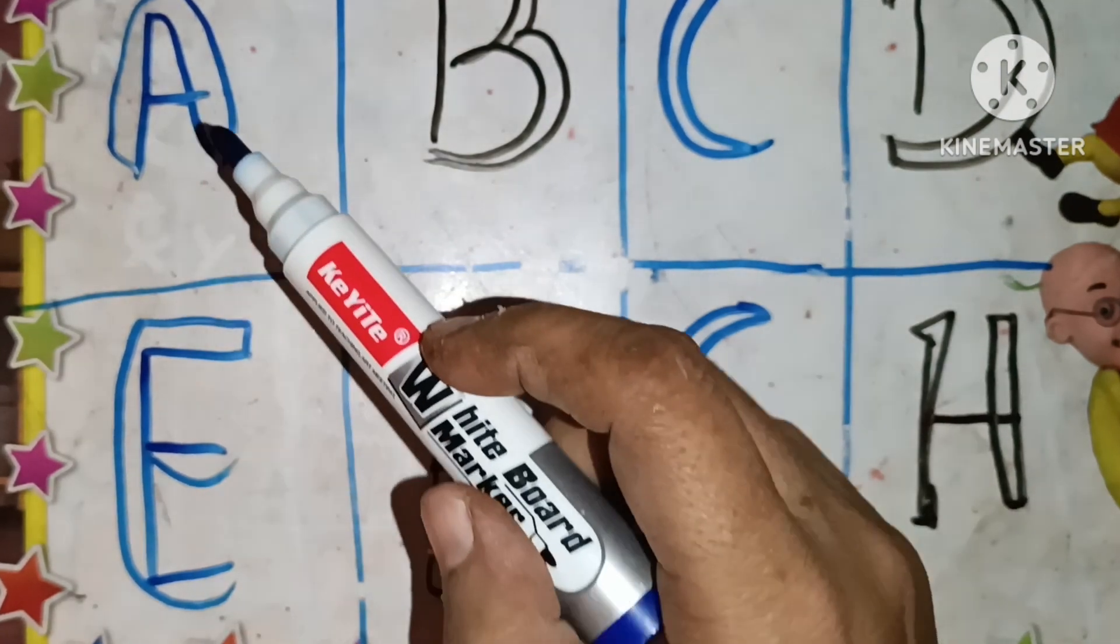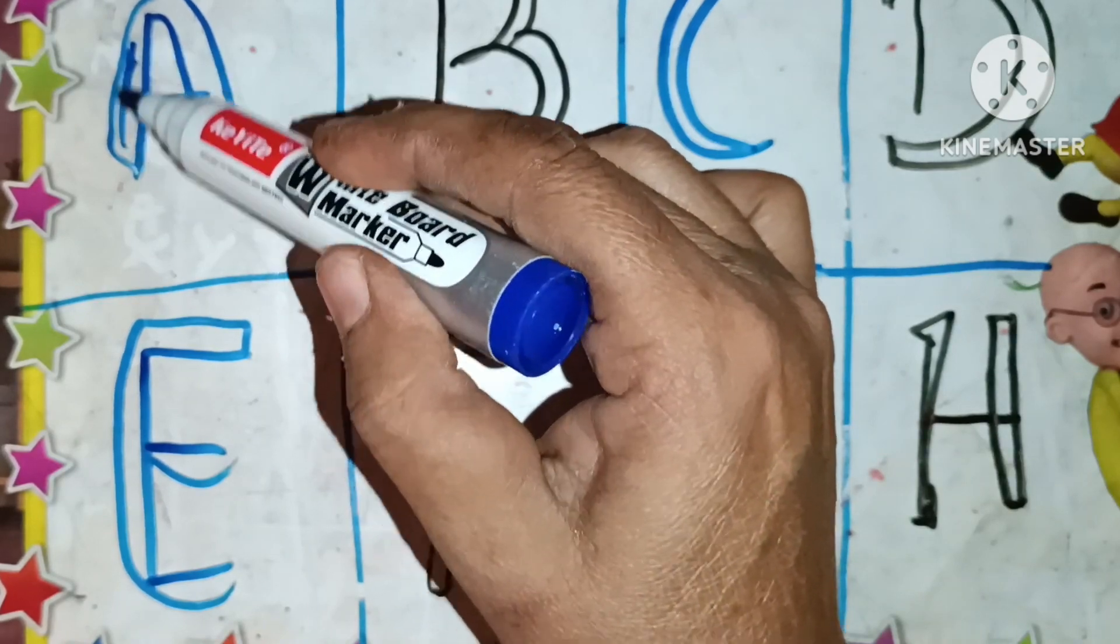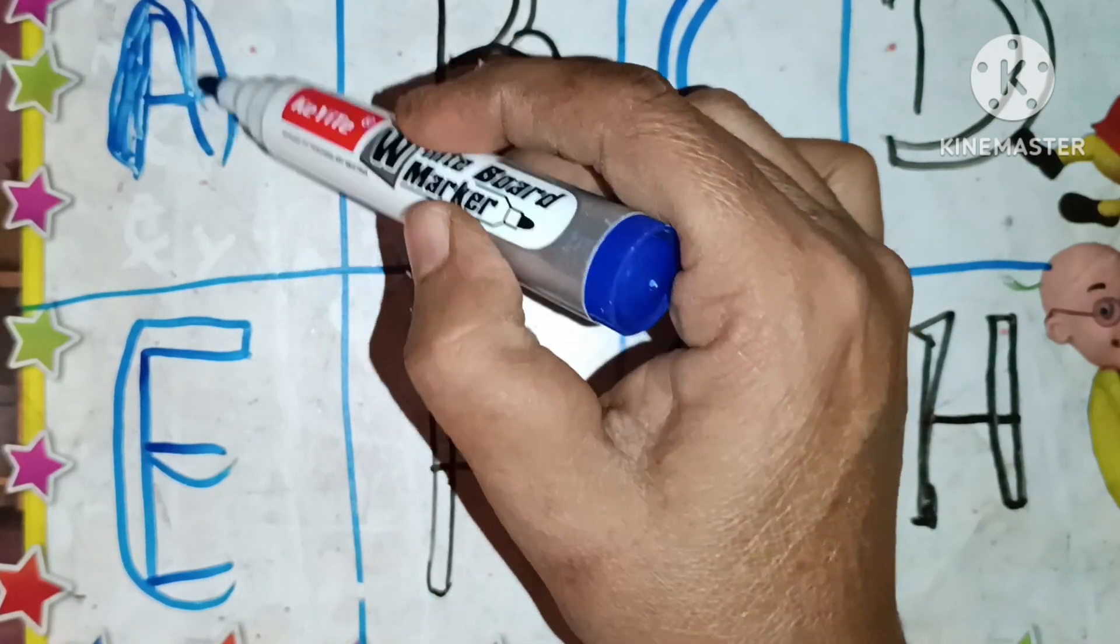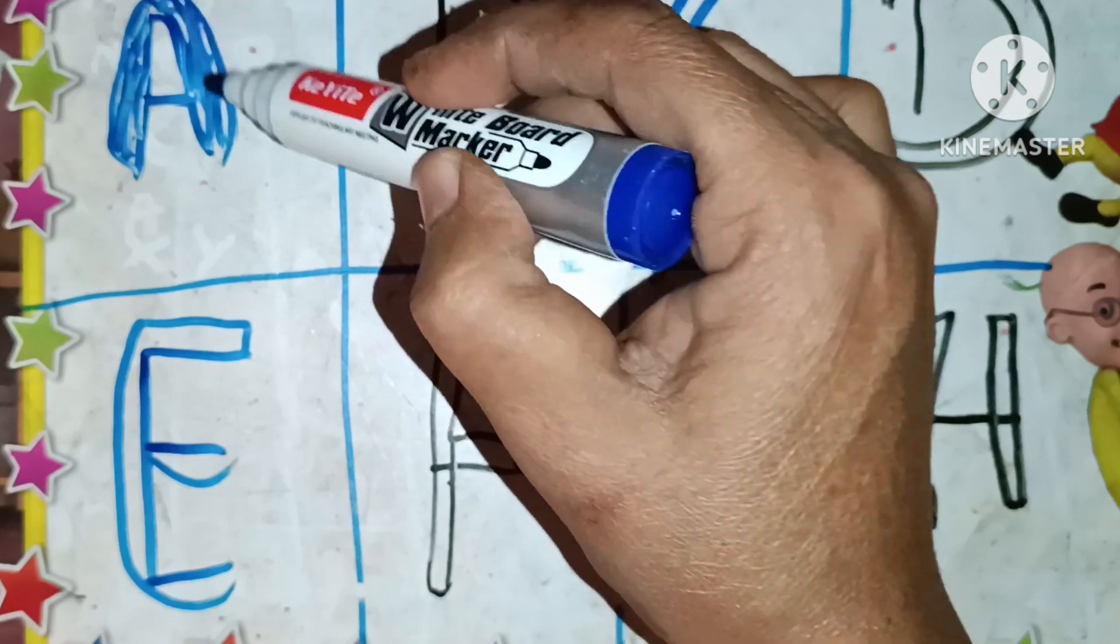Now we can start to read the ABC. A for apple.